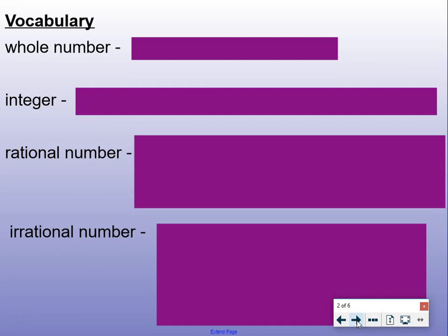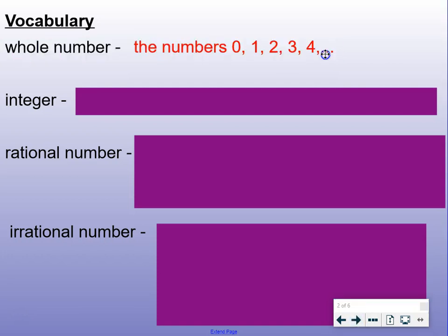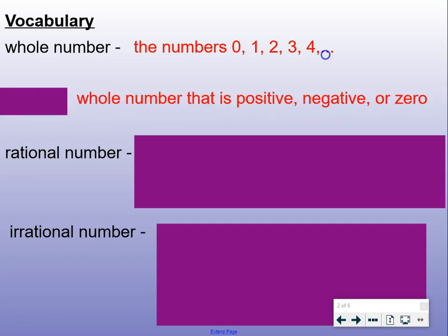Vocabulary. First off, we have whole number. That's the numbers 0, 1, 2, 3, 4. Integer: whole numbers that are positive, negative, or zero. So we have the whole numbers and their opposites, the negative versions.